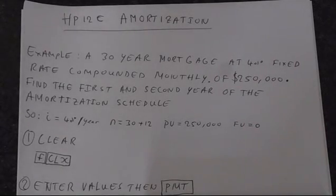So for this example, we've got a 30-year mortgage at 4%, it's a fixed rate, and we're compounding it monthly, and the loan value is $250,000. So we're going to find the first and second year of the amortization schedule.